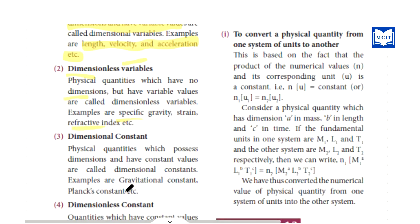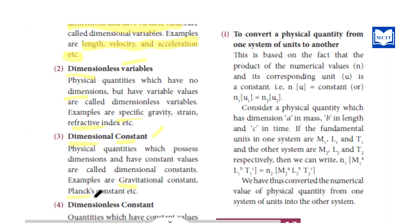Next part is dimensional constant. A dimensional constant is a physical quantity that has dimension and a constant value — the value is the same in all cases. Examples include the gravitational constant and Planck's constant. These are dimensional constants.